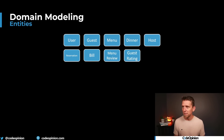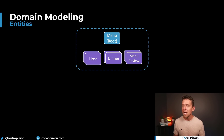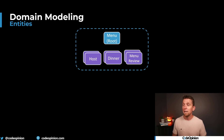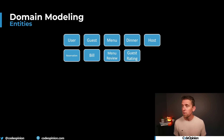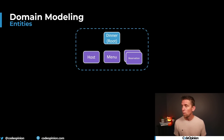Let's look at menu as an example. If menu is an aggregate root, we'd have a collection of hosts associated to it, a dinner would be associated to the menu, you'd have items on the menu, and guests could provide a review of the menu. And then looking at dinner — if dinner were the root, it would have a host associated to it, a menu associated to it, and a collection of reservations.